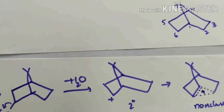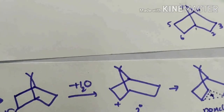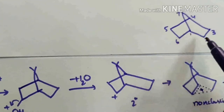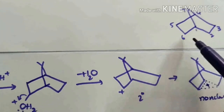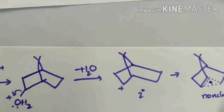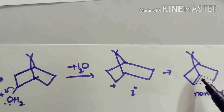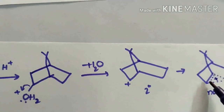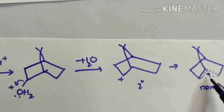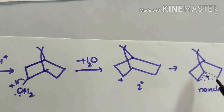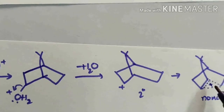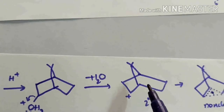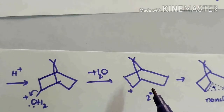Let us see the numbering in norbornane: C1, C2, C6. So the positive charge is equally distributed among C1, C2, and C6. It is more stable and increases the rate of reaction more when compared to a classical carbocation.